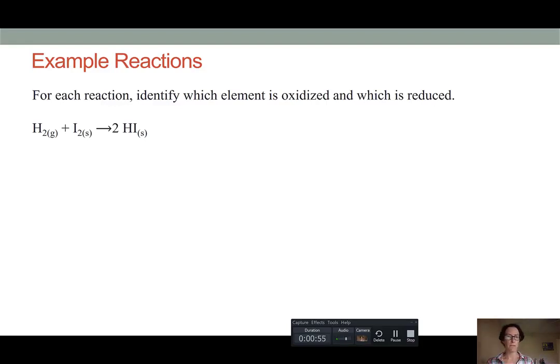Our first example is a fairly straightforward one in which we have two diatomic elements combining to form an ionic compound. Recall that when atoms are in their elemental state, they have an oxidation state of zero.